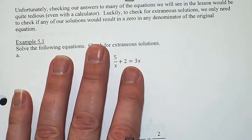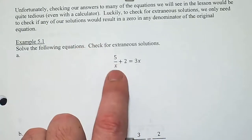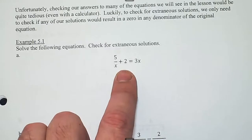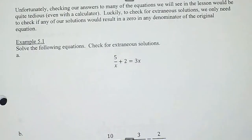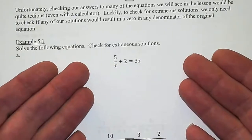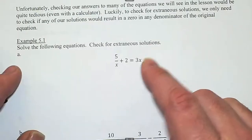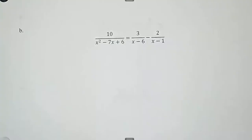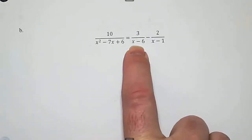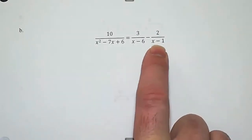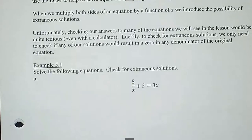Unless that solution makes a denominator equal to zero. Looking at this equation, if we got two answers like five and zero, I don't have to plug them in to check both sides — I just have to see if they make a denominator zero. Clearly zero would be bad here. Looking at letter B, there are two answers that would be extraneous: six would make this denominator zero, and one would make that one zero. That's all we have to look out for — does it make any denominator zero?